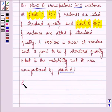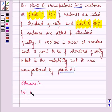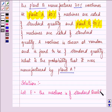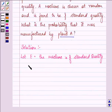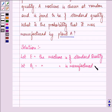So, let us discuss this question together. Here, let E be the event that the machine is of standard quality and let B1 be the event that the machine is manufactured by plant A and let B2 be the event that the machine is manufactured by plant B.